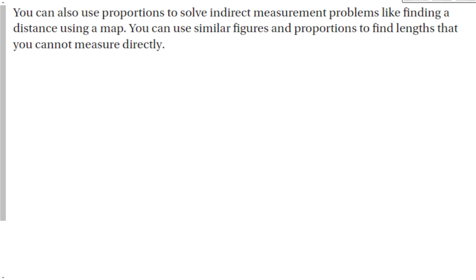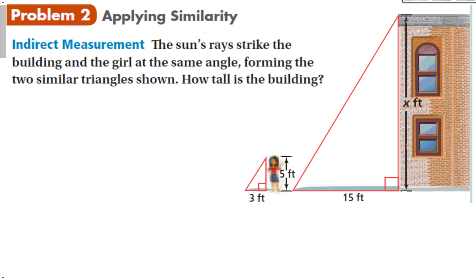We can also use proportions to solve indirect measurement problems like finding a distance using a map. You can use similar figures and proportions to find lengths that you cannot measure directly. Like for instance, this girl who is standing next to a building. The sun's rays strike the building and the girl at the same angle, forming two similar triangles. How tall is the building? If you know how far away from the building you are standing and how tall you are and how tall your shadow is, you can figure out the length of the building. Much easier to measure something on the ground than trying to figure out how tall the building is going up with a tape measure.